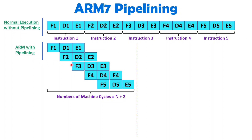If you observe how many machine cycles are required for execution with pipelining, it is: number of instructions plus 2. So for 5 instructions, in total 7 machine cycles are required for execution of this program.